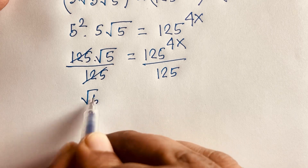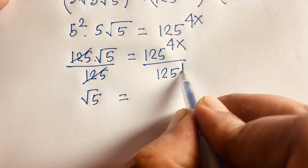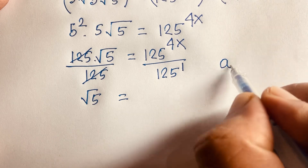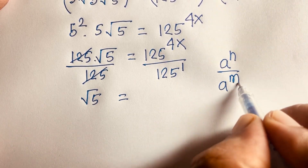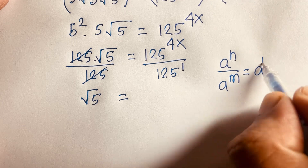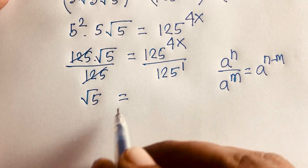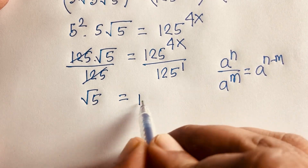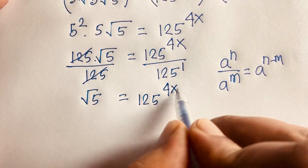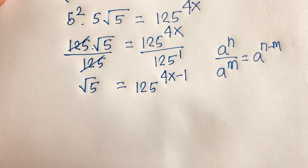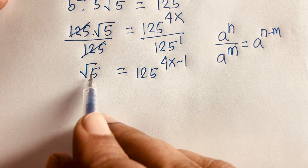The exponent on the left is 1. Using the exponential rule: a^n divided by a^m equals a^(n−m), I can write it as 125 to the power (4x − 1).